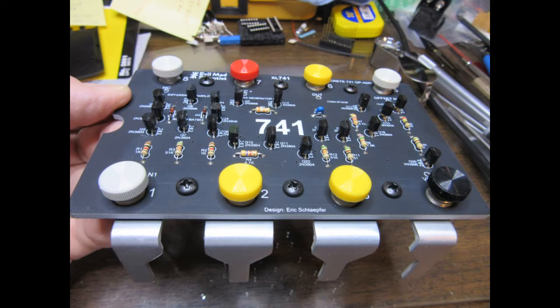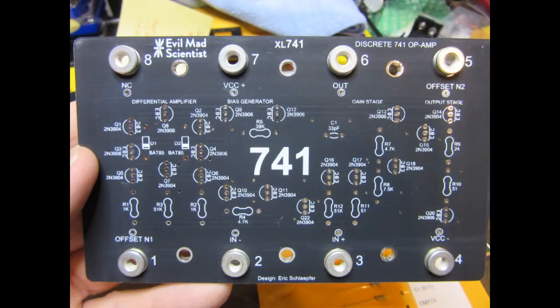The kit is called XL741, which presumably means extra-large 741. It consists of a high-quality double-sided circuit board that has black silk screen to approximate the black color of an actual 741 Op Amp IC.